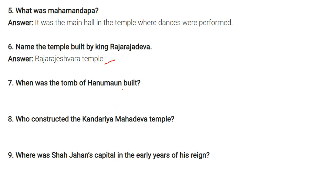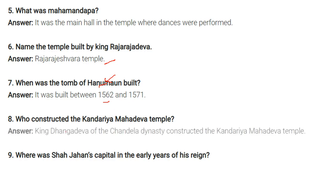Humayun's tomb was built between 1562 and 1571. The Kandaria Mahadeva temple was constructed by King Dhangadeva of the Chandela dynasty.